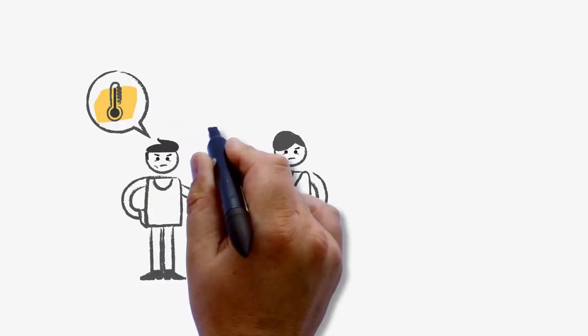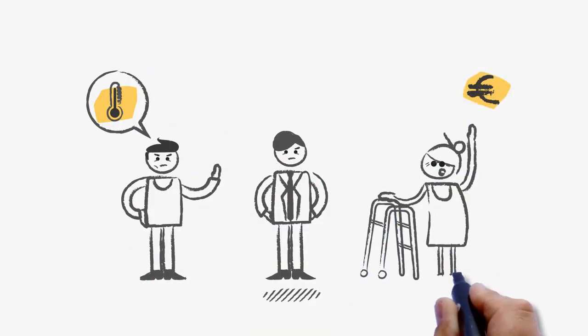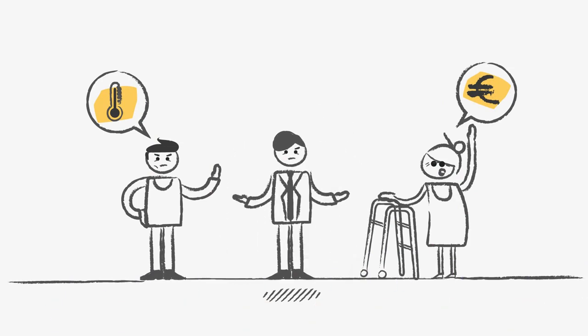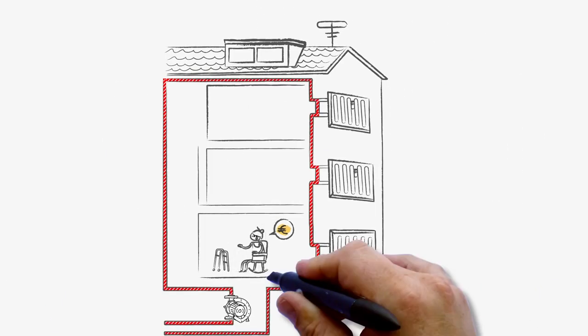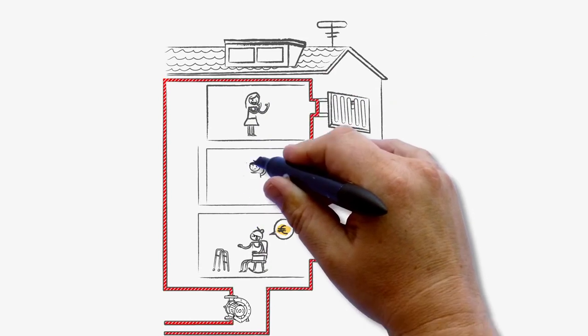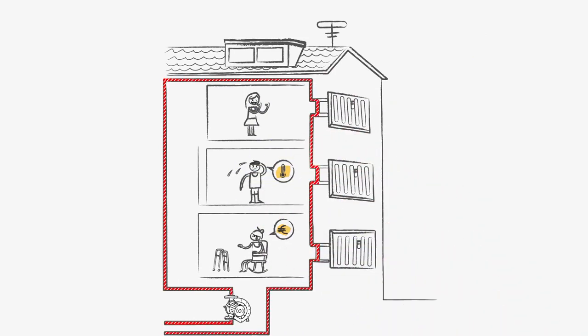you're probably familiar with complaints from residents about under- and overheated rooms and complaints about high energy bills. Energy inefficiency is mainly caused by a constant flow of hot water in the heating system, regardless of whether the radiators are open or closed.